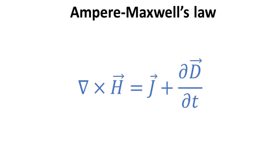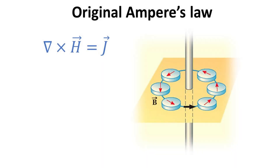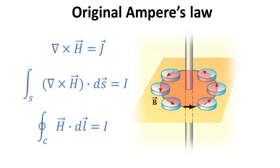While the electric and magnetic Gauss law governs how their fields diverge, the remaining pair of Maxwell equations governs the circulation of these fields. The third equation is the Ampere-Maxwell's law, which states that the curl of the magnetic field is given by the charge current and the rate of change of the electric flux density. Beginning with the original Ampere's law — the embodiment of the phenomenon first discovered by Ørsted — a current-carrying wire produces a magnetic field that encircles it in a manner described by the right-hand rule. Using the Stokes' theorem, Ampere's law in integral form states that the circulation of the magnetic field around the wire equals the current that passes through it.